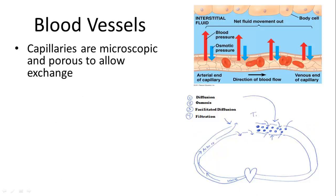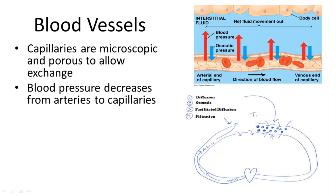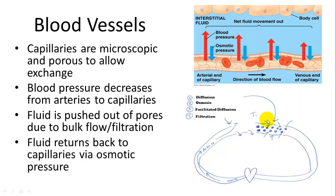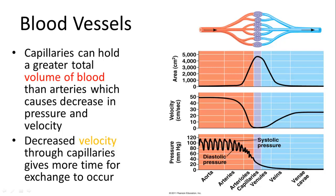Capillaries are microscopic and porous, allowing exchange of nutrients, wastes, and gases. Blood pressure decreases from the arteries to the capillaries because there are many more capillaries, but there's still enough pressure for fluid to be pushed out of blood vessels due to bulk flow. It then returns due to osmotic pressure. Capillaries can hold a great volume of blood, and the pressure drop allows for gas exchange at a rate that is sustainable and won't damage tissues.